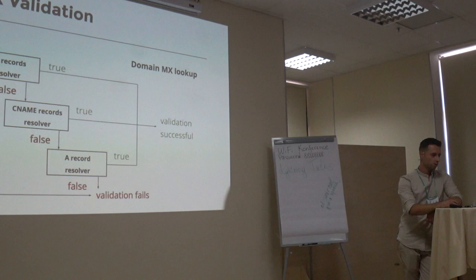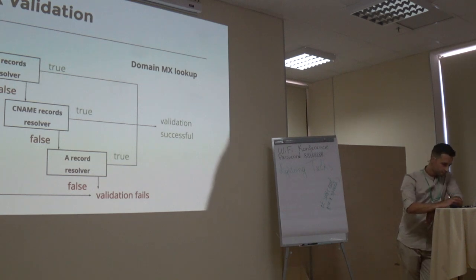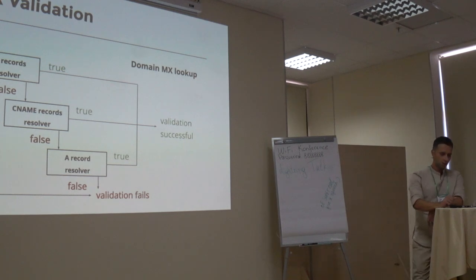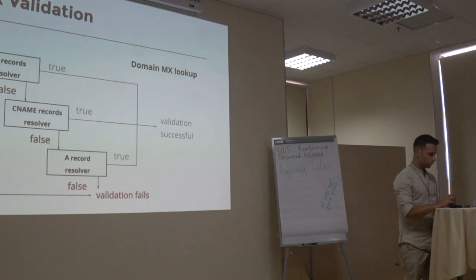This is schema of typical domain MX lookup based on RFC 5321 standard. It consists of three sub-steps: MX, A name and A record resolvers. The point of each resolver is attempt to extract the mail servers from email domain. If at least one of the servers exists, the validation is successful. Iteration is processing until the resolver returns true.